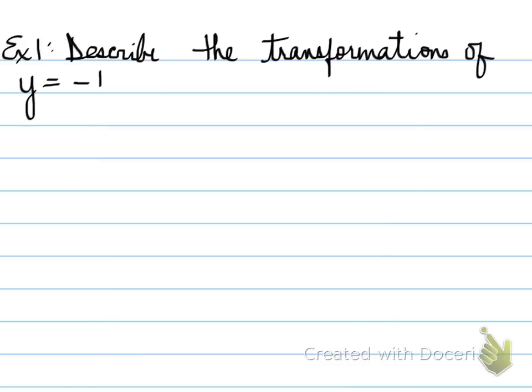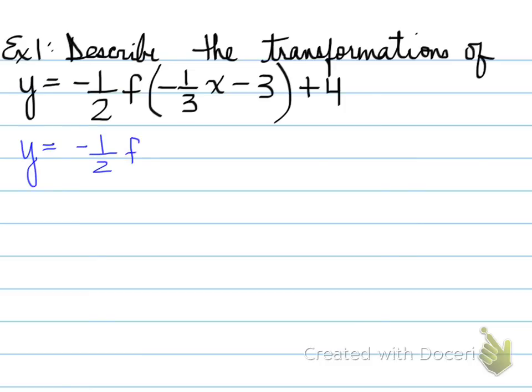All right, example number one. You're asked to describe the transformations of the following: y = -1/2·f(-1/3·x - 3) + 4. What is this saying? Well, first important thing that you need to do is remember that the coefficient of x must always be 1. First step is to isolate the x so that it is removed with the coefficient. And when you remove that, you must remove it from everything inside there. And we have the following.